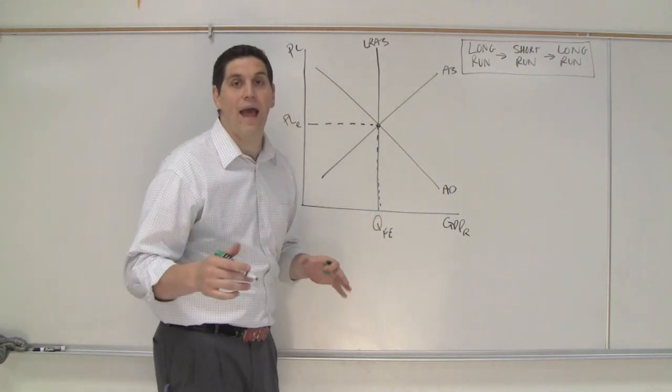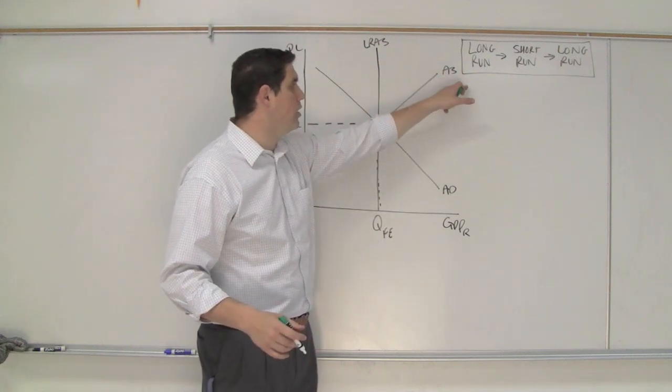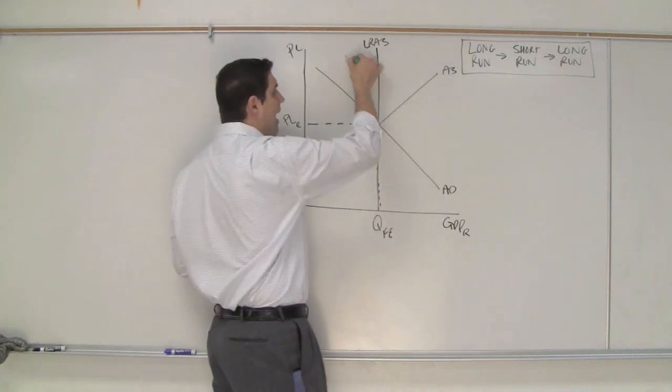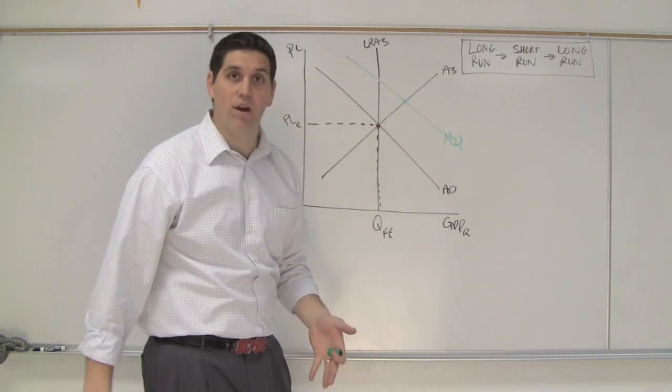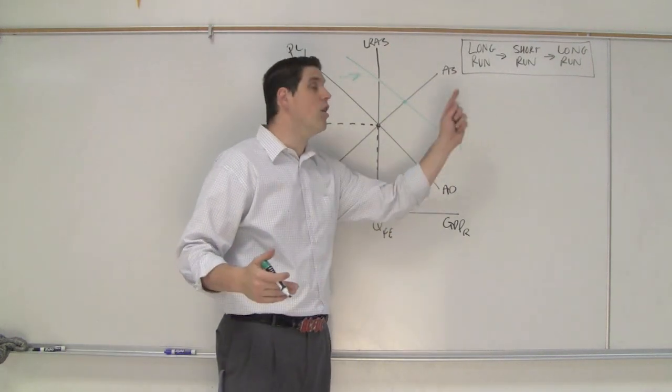Let's say there's an increase in aggregate demand. So right now we're in the long run and we're going to go to the short run. Let's say aggregate demand increase. Now we're here at this point. We have an inflationary gap. The question is what's going to happen in the long run?